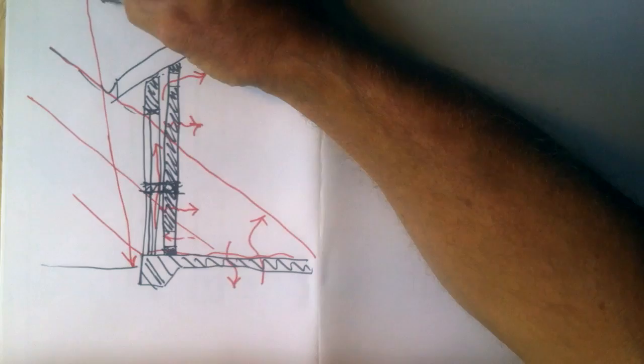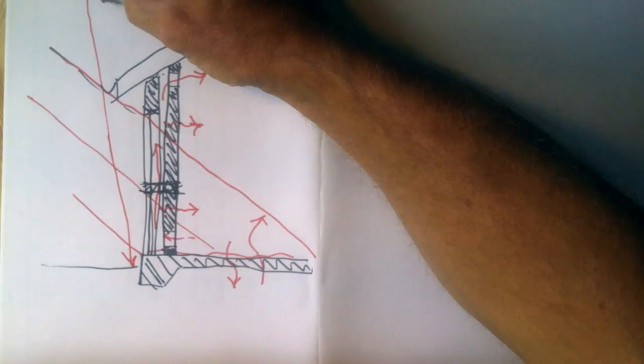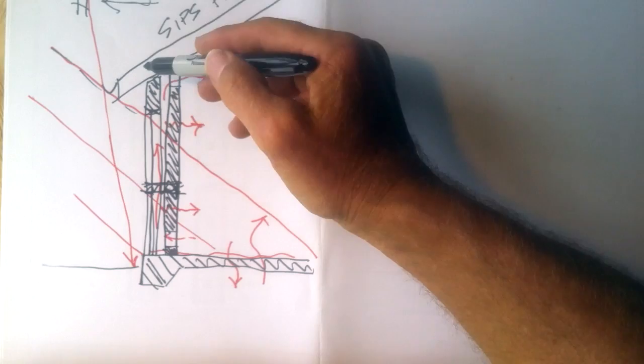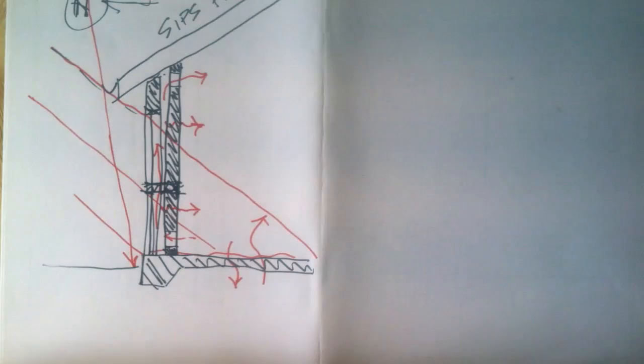Now I just want to make the important point that these sun angles and using the eave overhang only work on the north wall of the house. That's why the north aspect and good solar access is really important for a passive solar house.